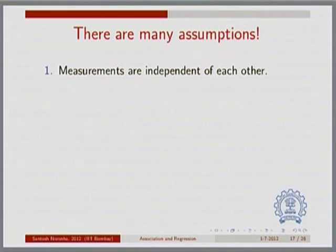Let me quickly run through these assumptions, because if it turns out that in your experiment these assumptions are not being followed or are not true, then you must be open to the possibility that your straight line fit is probably not a good fit — in other words, an incorrect fit to your data. The assumptions that go into fitting a straight line using a least squares approach are that your measurements are independent of each other.